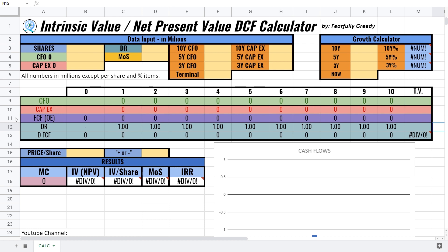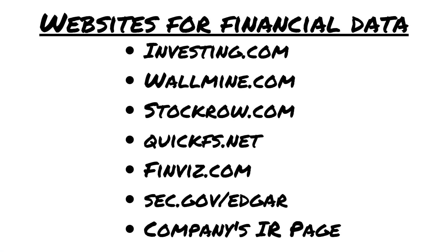I will do an example. To use this tool you need the financial data of the company — you can use many websites. Useful ones include investing.com, wildmine.com, stockrow.com, quickfs.net, finbiz, and Edgar, the official government tool. You can also use the company's investor relations page to get official documents and extract these numbers.